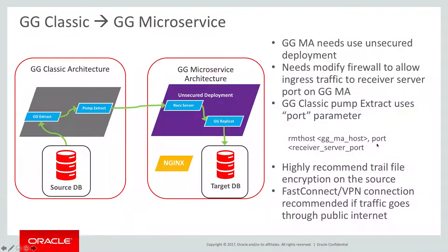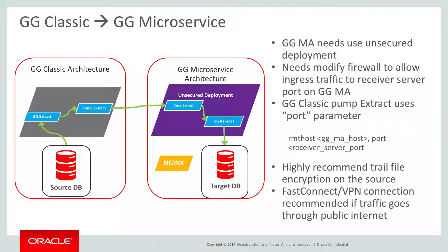If you open the receiver port to allow the pump extract to connect, you just need to use the port parameter instead of mgr port. This way the receiver server will understand the old Golden Gate protocol to receive all the trail files. Because there is no SSL encryption between these two endpoints, we highly recommend you encrypt the Golden Gate trail files before the pump extract sends them out. If this is an on-premise to cloud communication, we also recommend a FastConnect or VPN connection to further secure the communication. This is the first, simple way to connect the pump extract directly to the receiver server.